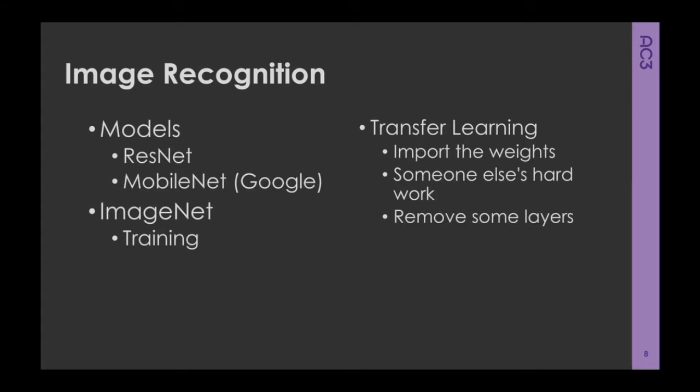If you used ImageNet and did machine learning from scratch it could take hundreds or thousands of instances and days or weeks — very expensive. What we've done here is use transfer learning: I've taken the MobileNet model, imported the weights from the ImageNet training that someone's already done, removed a couple of layers from the neural net, and just retrained on top of that. In literally four or five minutes we can teach the model to differentiate between rock, paper, and scissors because the hard work of detecting images has already been done.